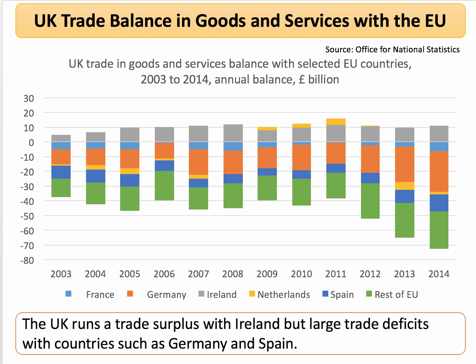The trade balance is also quite important. The UK tends to run a trade surplus with Ireland, but significant, chunky trade deficits with countries such as Germany and Spain. The UK had an overall trade deficit — the value of imports greater than the value of exports — of £82 billion with the EU in 2016. There was a surplus of £14 billion on trade in services, but a £96 billion trade deficit in goods with the EU in 2016 — cars, washing machines, DVD players, all that kind of stuff.